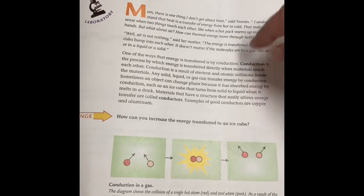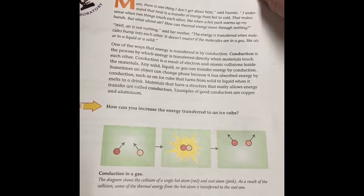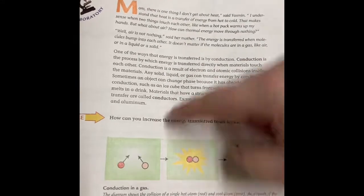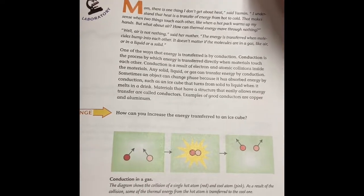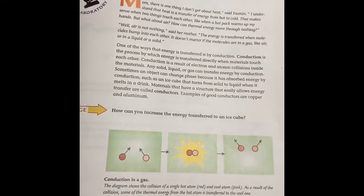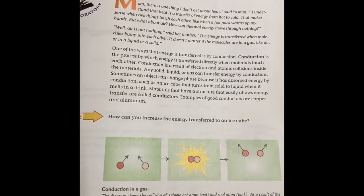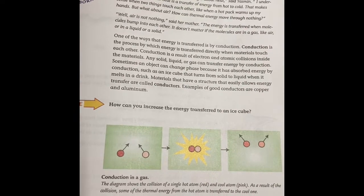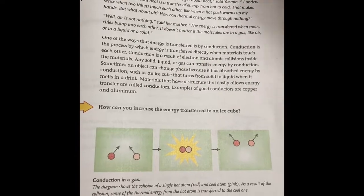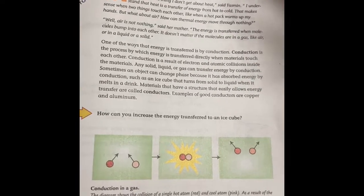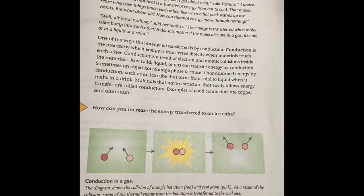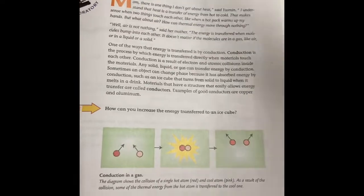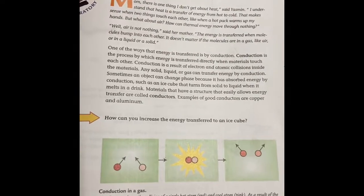We're going to go through setting up the activity in our notebook like we normally do. Some of your vocab words are already bolded — conduction and conductors. A conductor is something that allows energy to pass through it freely. So it's not just something that is metal — it's anything that allows energy to pass through it easily. If you remember, we talked about carpet versus tile, and carpet's an insulator while tile is more of a conductor. That's why when we stand on tile, it feels cold, because it allows that energy to pass from our feet to the floor really fast.